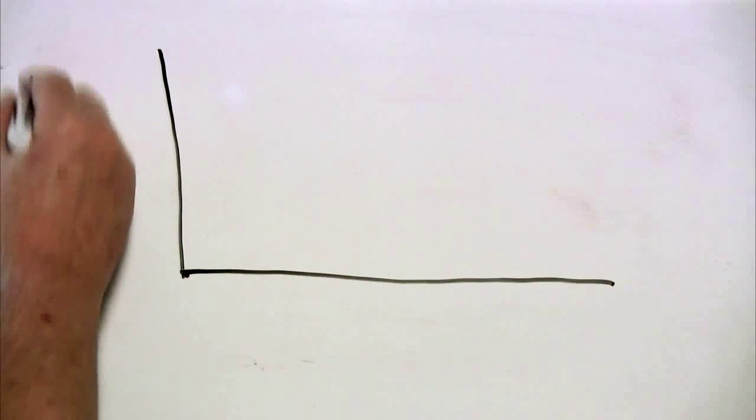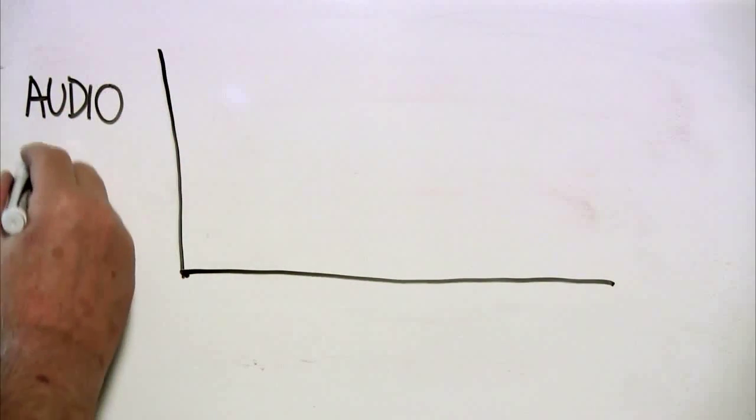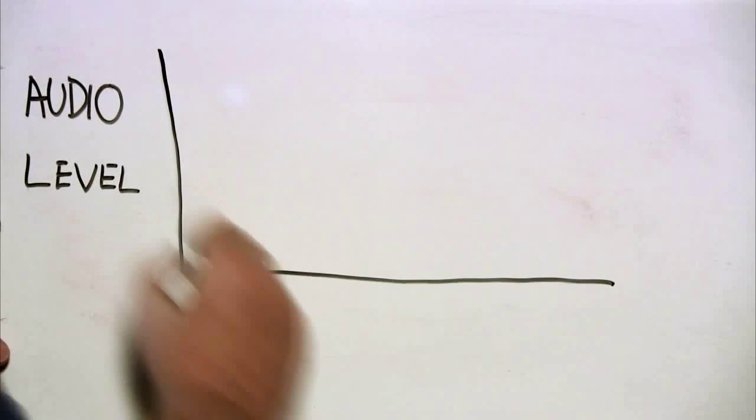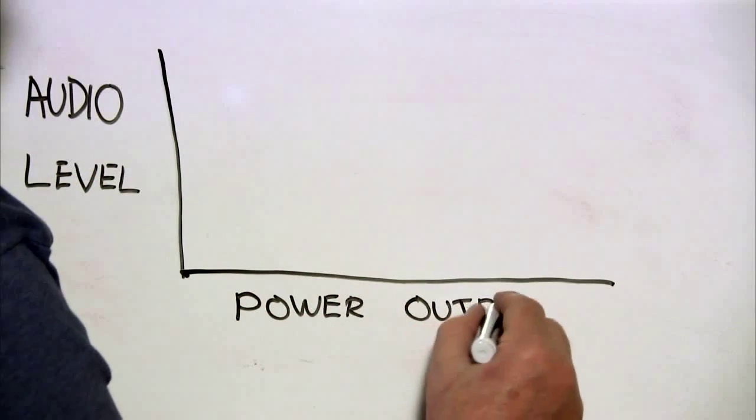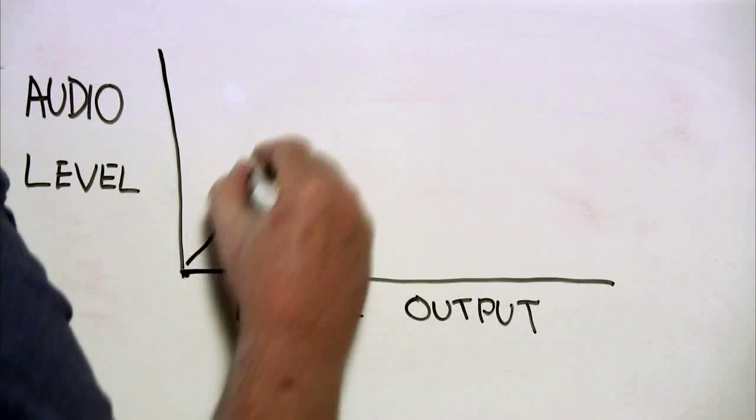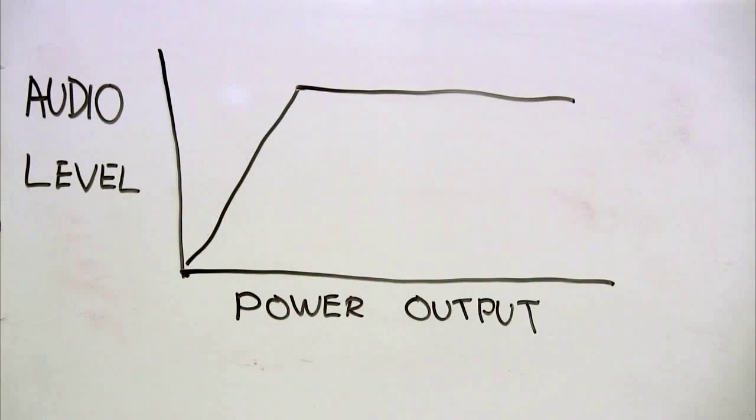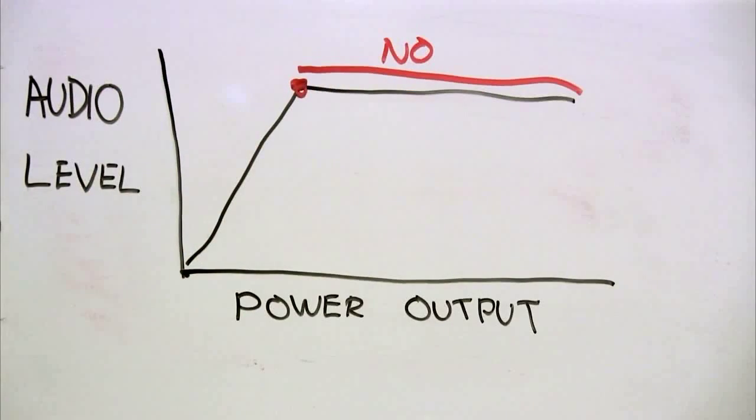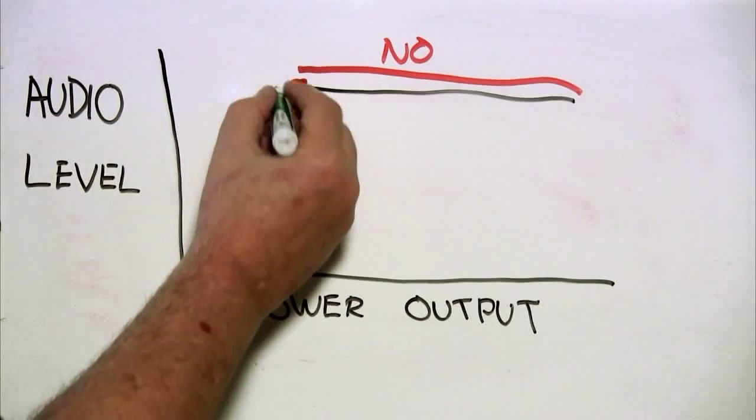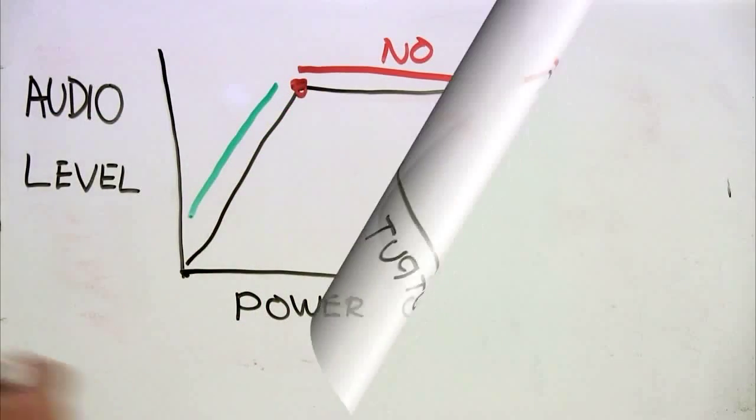Our goal here is to operate our audio level in the linear portion of our power output curve. As you can see, as we increase audio level further, power output does not continue going up. At that point, we've saturated the system, we're causing distortion, we're probably splattering on the band. So you want to back off the audio level so that you're ensured that you're operating in the linear portion.